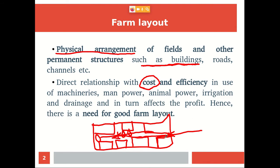No one is willing to come inside our farm just to purchase anything — they can purchase from the entrance and go. Near the entrance, we can keep ornamental crops or nursery plants so it will be attractive for consumers. This physical farm layout will have an impact on farm business income. That is why we need to understand how a farm layout should be — it has a direct relationship with cost and efficiency.